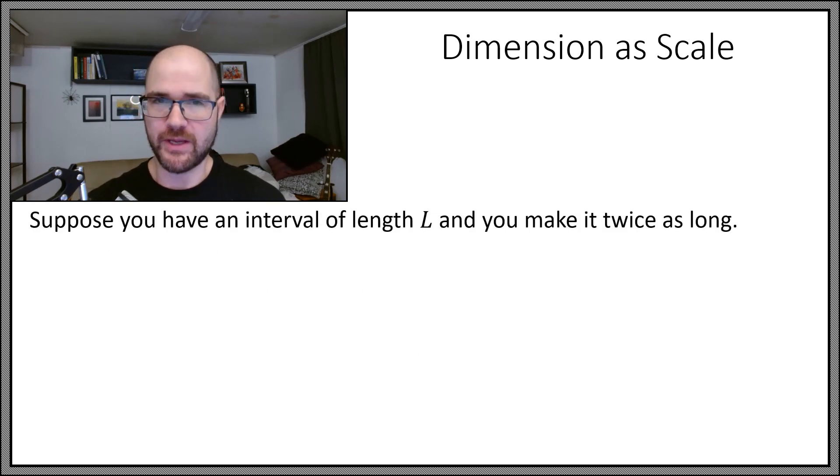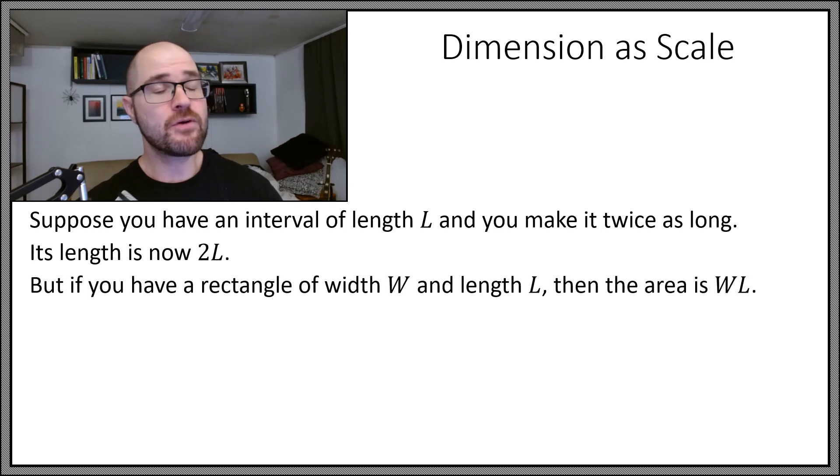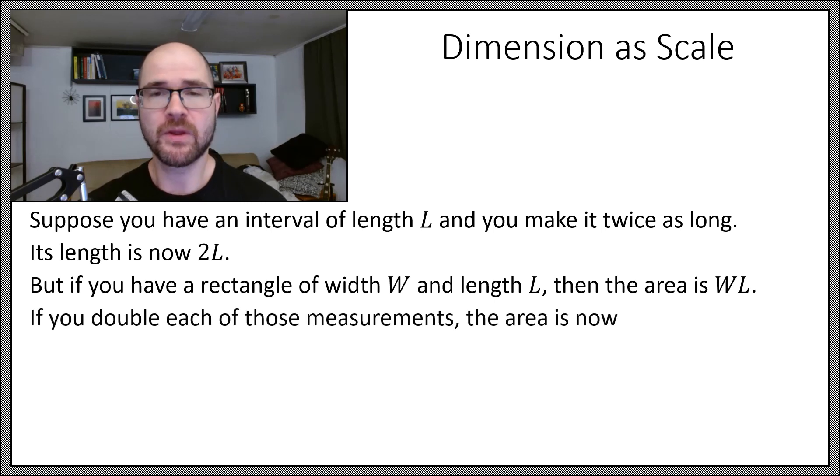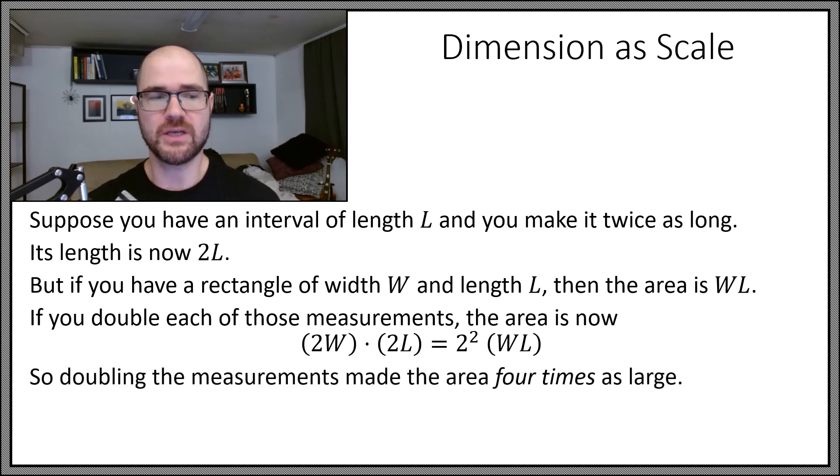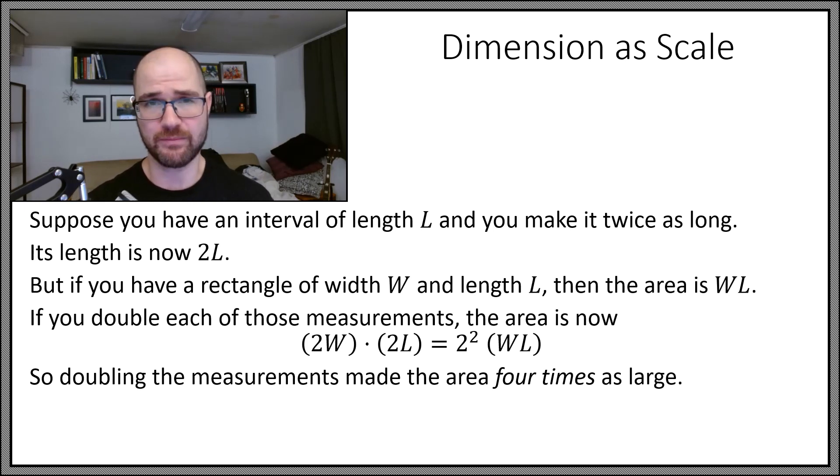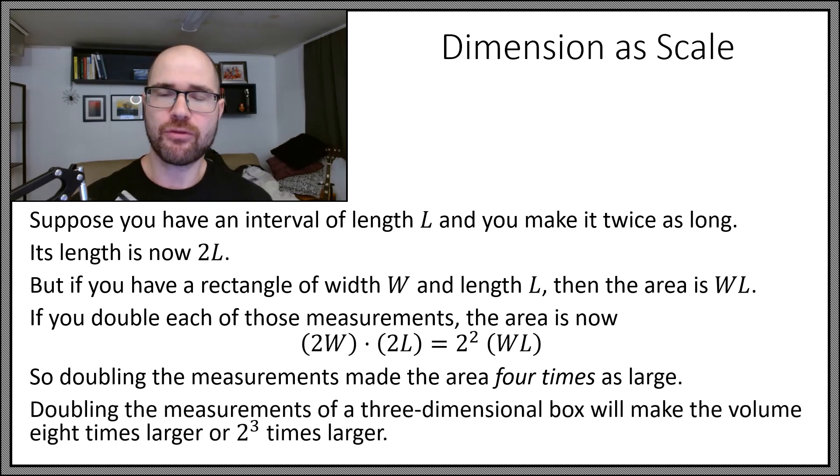But that's not the only way we can think about dimension. Suppose you have an interval of length L and you make it twice as long, so its length is now 2 times L. But if you have a rectangle of width W and length L, its area is the product of the two W times L. So what happens if you double each of those measurements? Well now you have 2W width and 2L length and the product is now 4WL. So doubling the measurements, width and length, actually made your area 4 times as large. If you have a three-dimensional box that also has a height and you double that, you will now have a box that's twice as large in every dimension, but its volume got multiplied by 2 to the third, or 8.